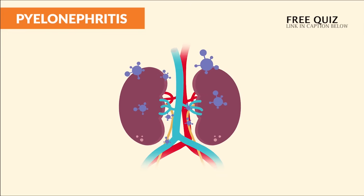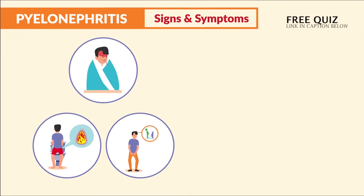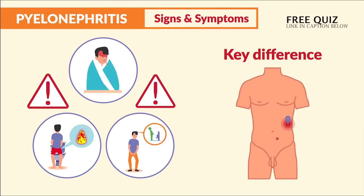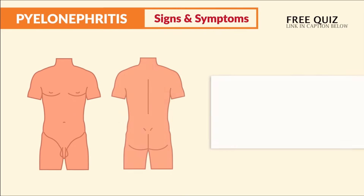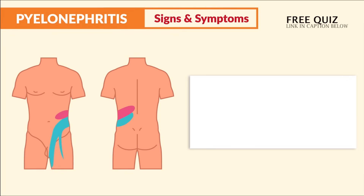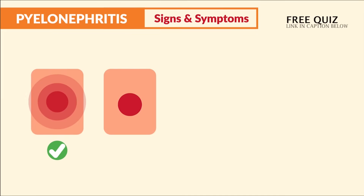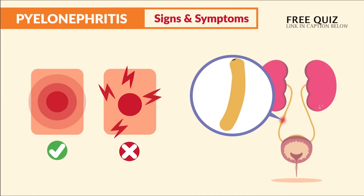For pyelonephritis — that kidney infection — we see the same signs and symptoms as a UTI but far worse. The key difference is pain location: costovertebral tenderness, described as dull flank pain that extends toward the umbilicus — basically the belly button, not the groin area. This dull pain is not excruciatingly sharp.